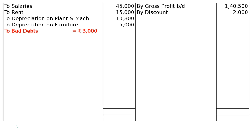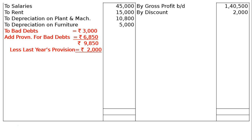Next: bad debts rupees 3,000 from the debit side of the trial balance. Add provision for bad debts — 5 percent on debtors equals rupees 6,850. This gives a total of rupees 9,850. Less last year's old provision of rupees 2,000. In the final column we have rupees 7,850.